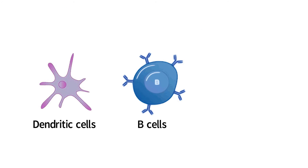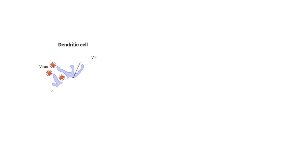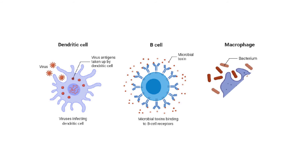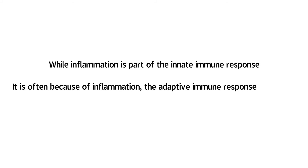This process is the same when it is a dendritic cell, B cell, or macrophage performing the antigen presentation. The process begins when dendritic or other professional antigen presenting cells encounter pathogenic proteins at the site of injury during inflammation. Thus, while inflammation is part of the innate immune response, it is often because of inflammation that the adaptive immune response is initiated.